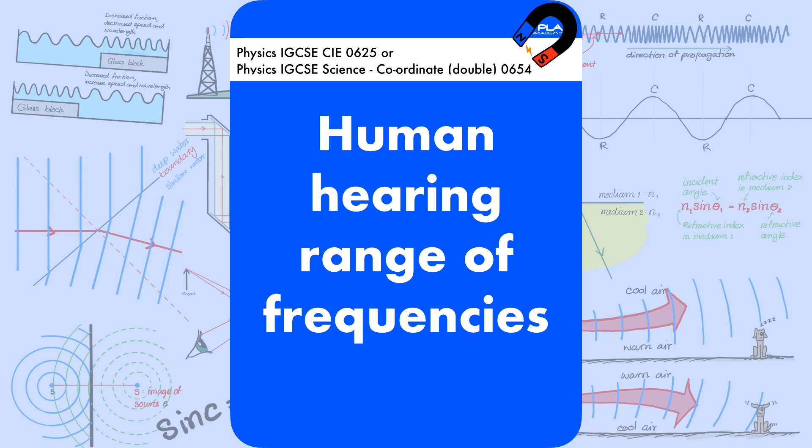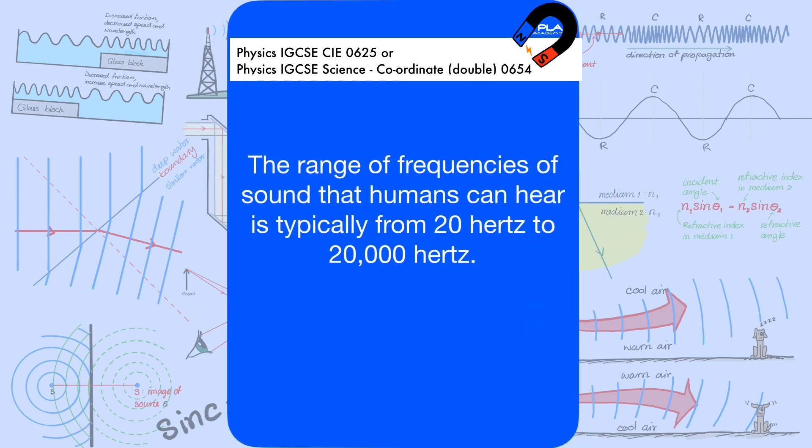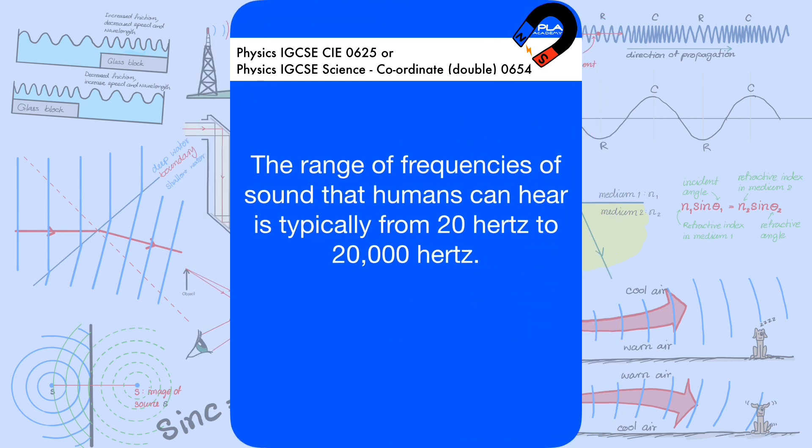The range of frequencies of sound that humans can hear is typically from 20 Hz to 20,000 Hz.